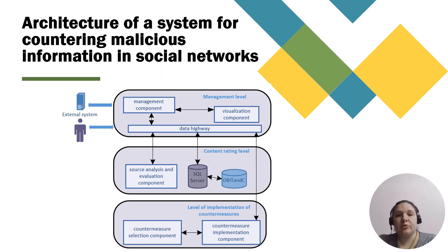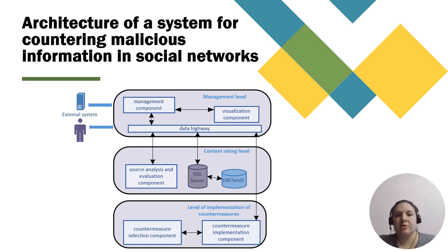The architecture includes three levels. The first level is the management level, with components for request management, visualization, and reporting. The second level is the content evaluation level, containing the source analysis and evaluation component, SQL Server, and data storage. The third level is the countermeasurement implementation level, with a countermeasurement selection component and a countermeasurement implementation component.